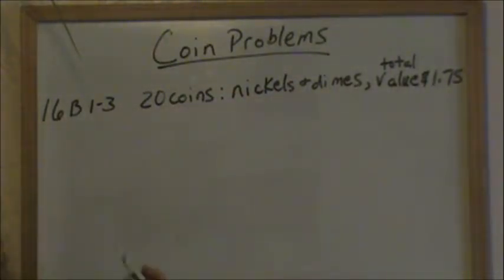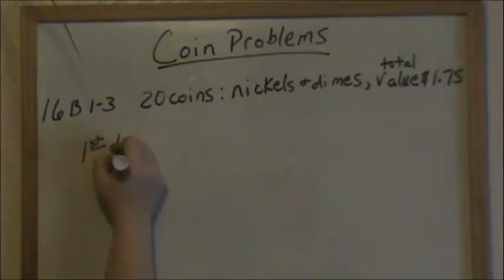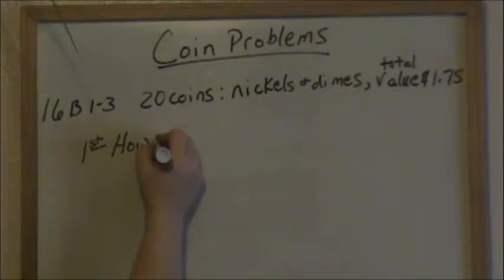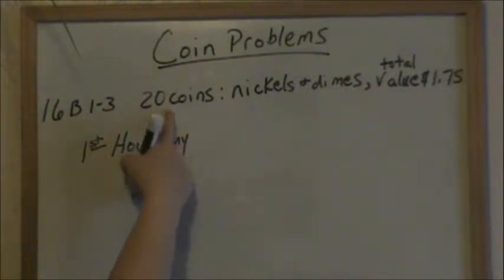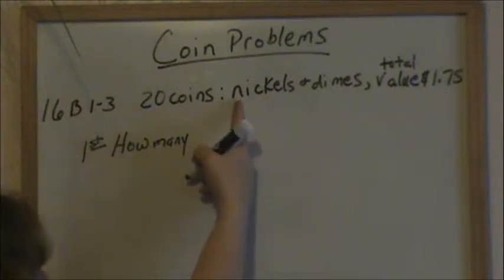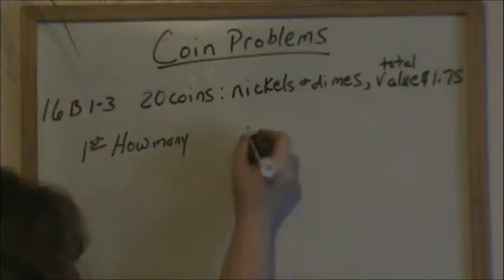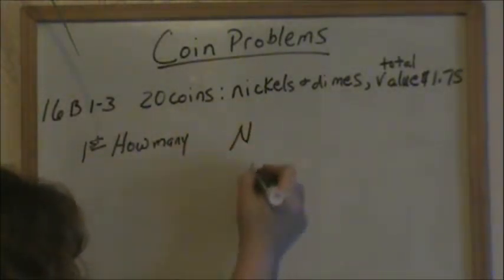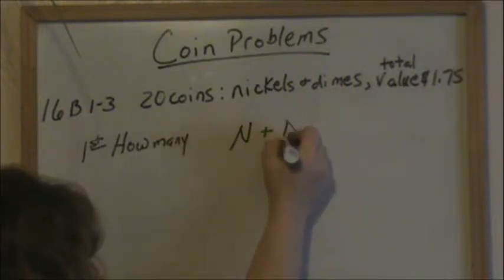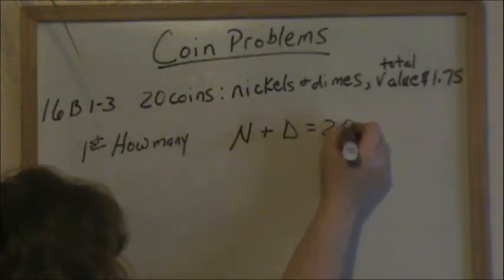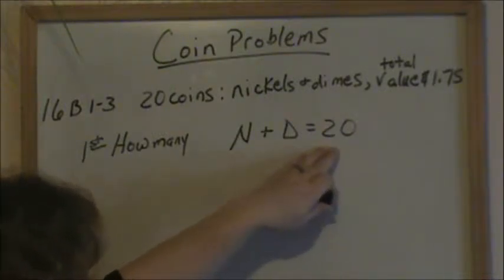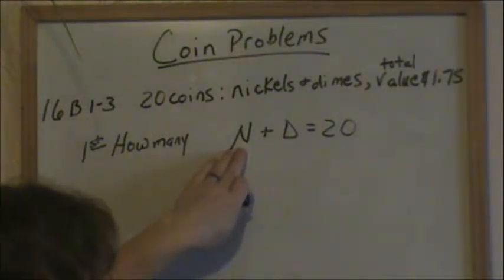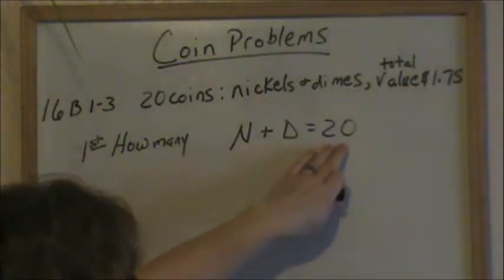Our two equations — the first equation is going to be how many. We have 20 coins made up of nickels and dimes. So we can say that the number of nickels plus the number of dimes is equal to 20 coins. That's our first equation: how many coins? The number of nickels plus the number of dimes equals 20.